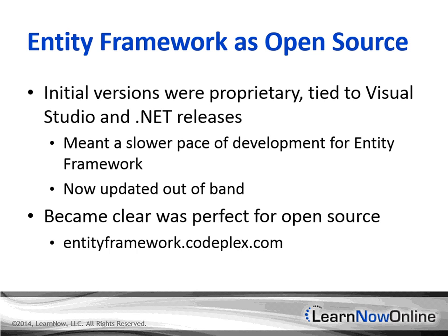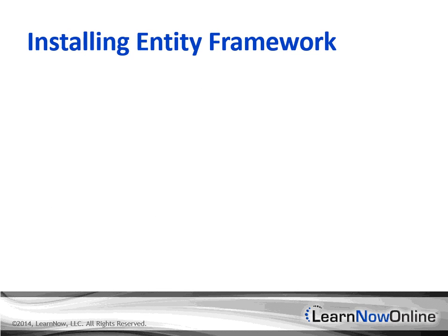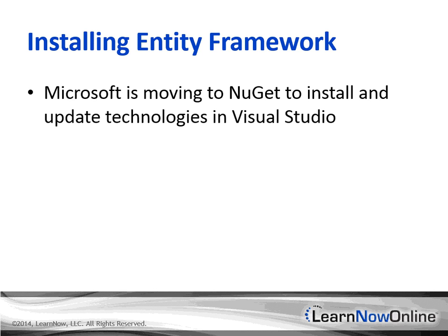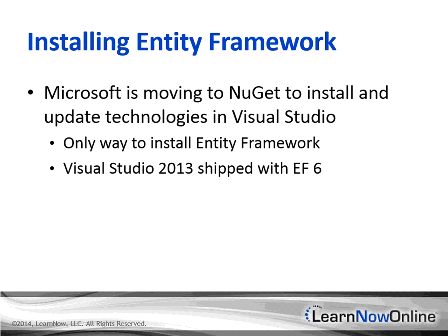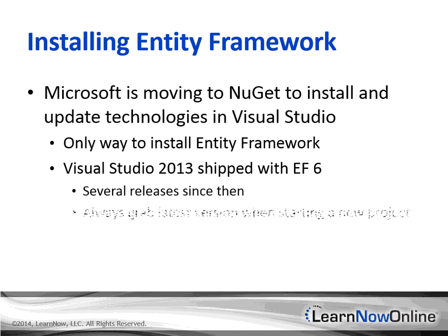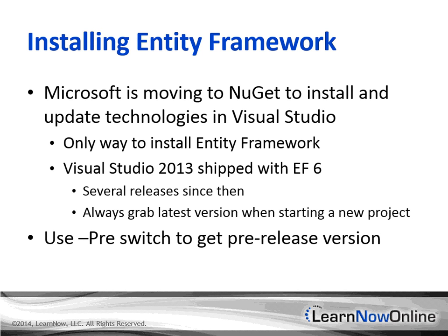Going open source has had the somewhat surprising effect of seeming to increase the pace of development and releases. Over the last several years, Microsoft has moved to its NuGet package deployment technology to let you easily install new and updated technologies to projects within Visual Studio. For the last several versions of Entity Framework, this has been the only way to get the new version. Visual Studio 2013 shipped with Entity Framework 6.0 right in the box, but there have already been a few new releases, so you'll always want to grab the latest version when you start a new project. You can get the latest stable version by default, or add the -pre switch to the NuGet command for the latest pre-release version, or go to the CodePlex site and download the nightly builds.